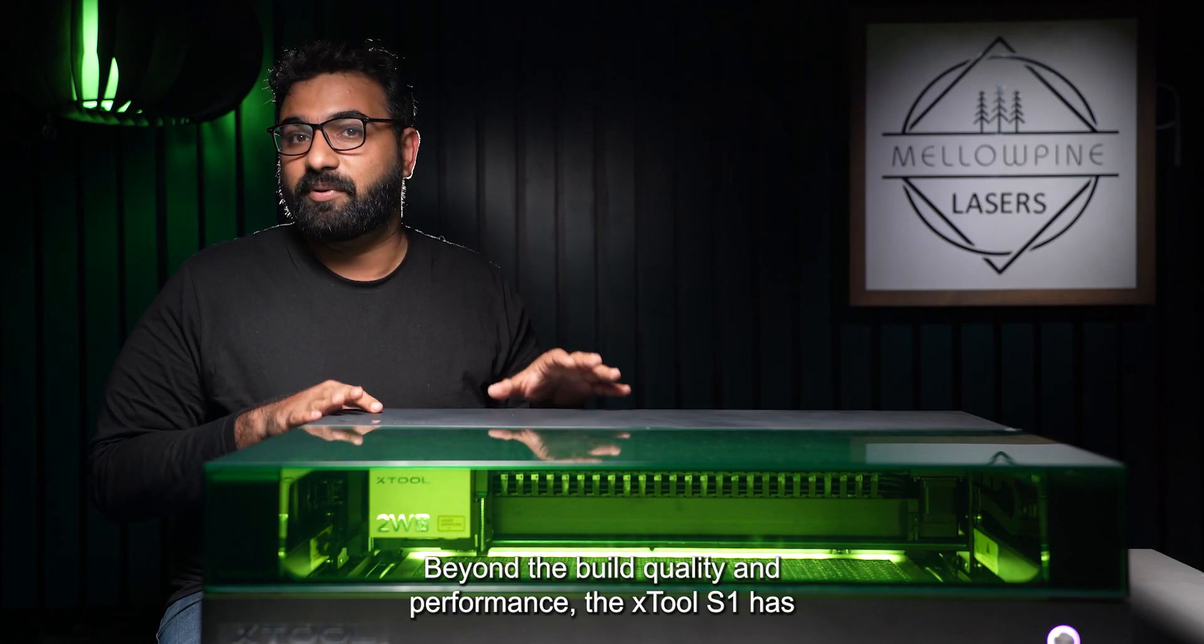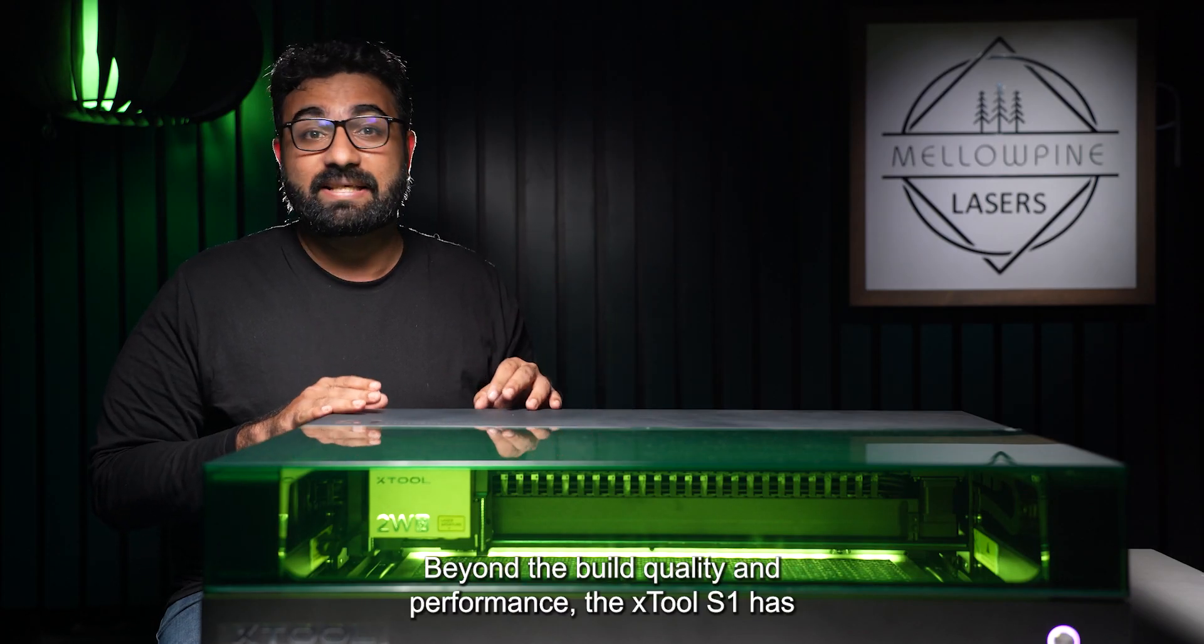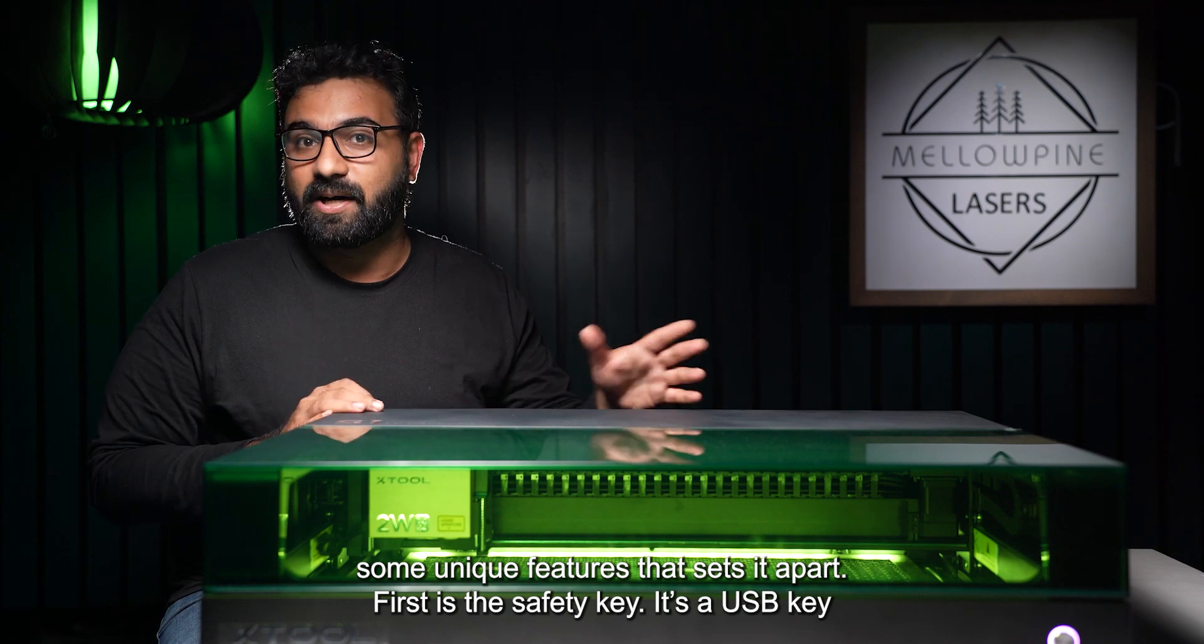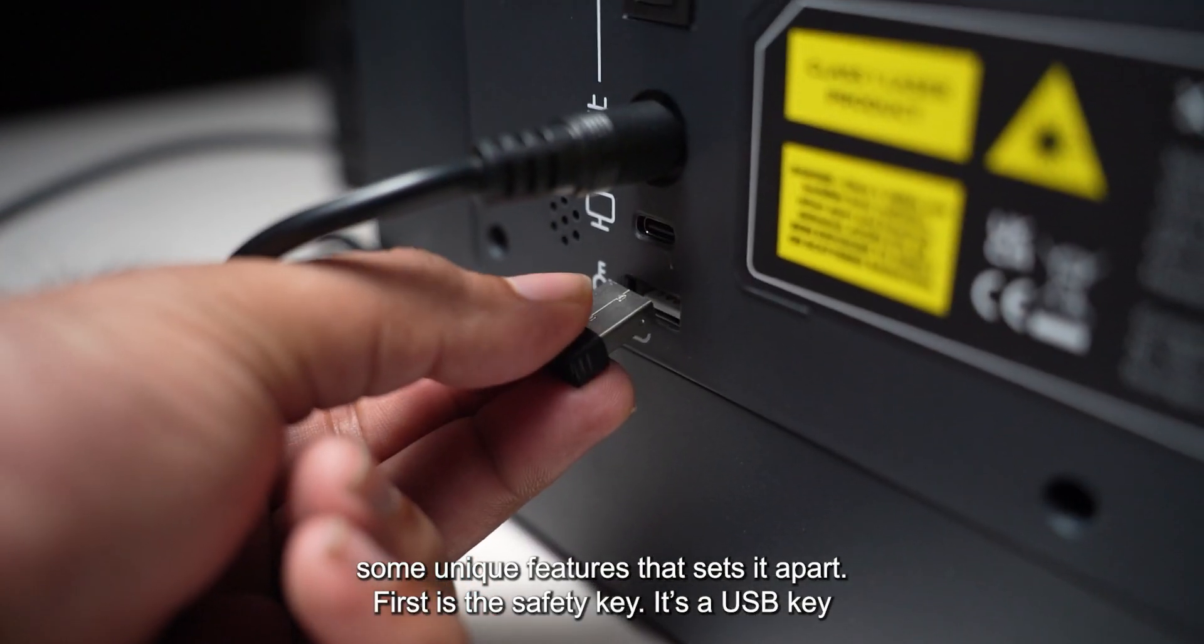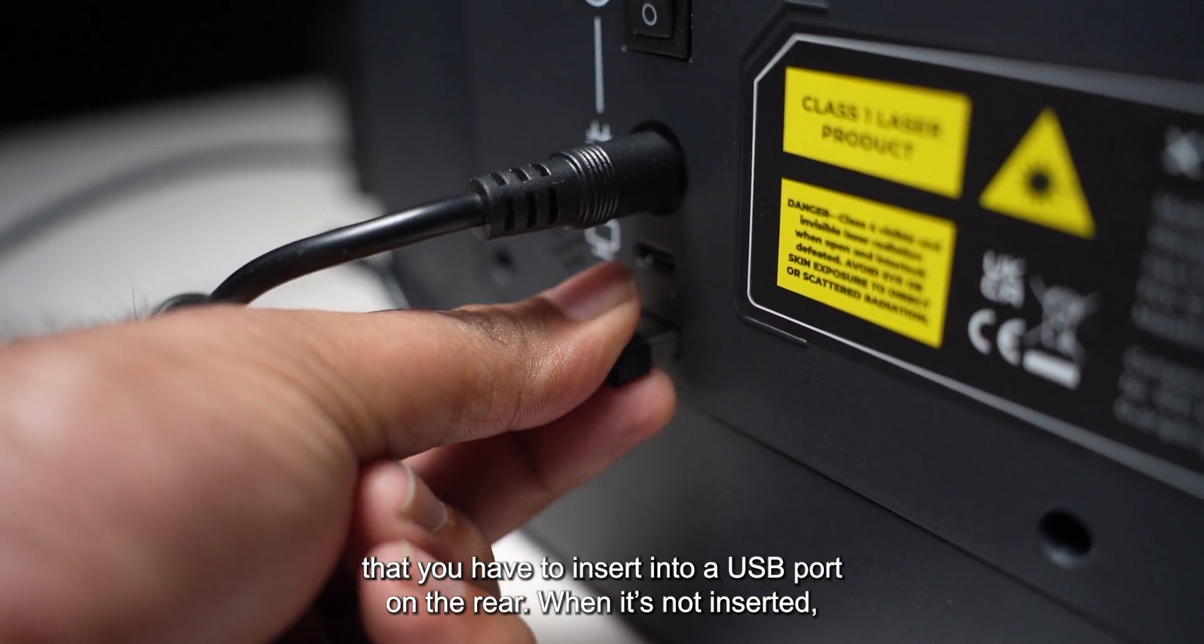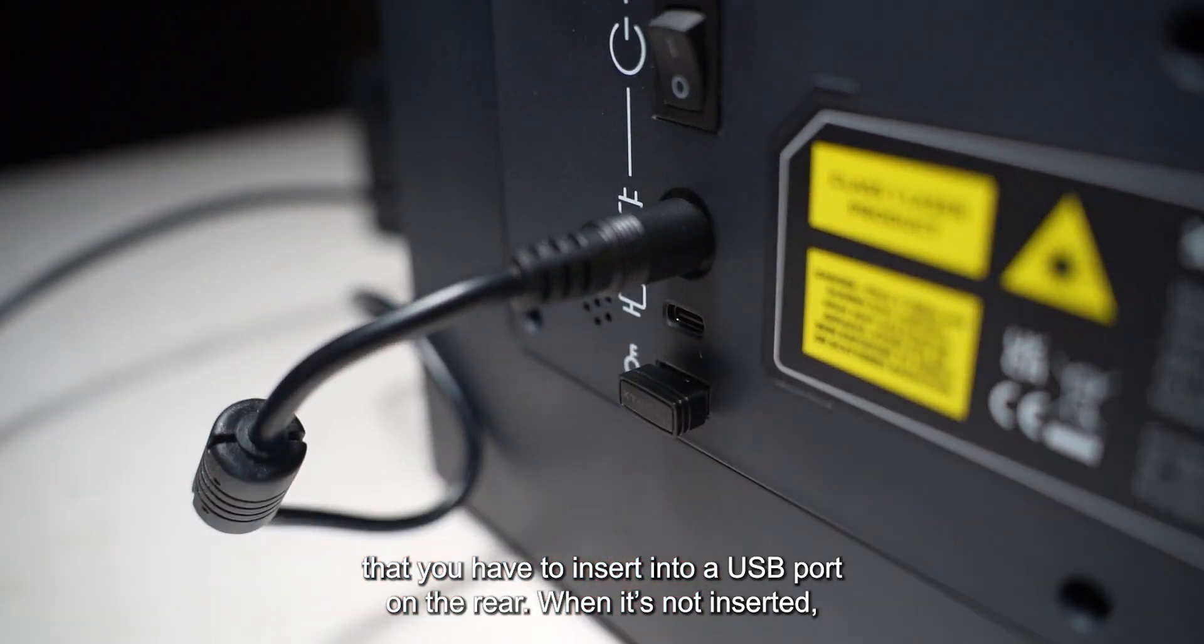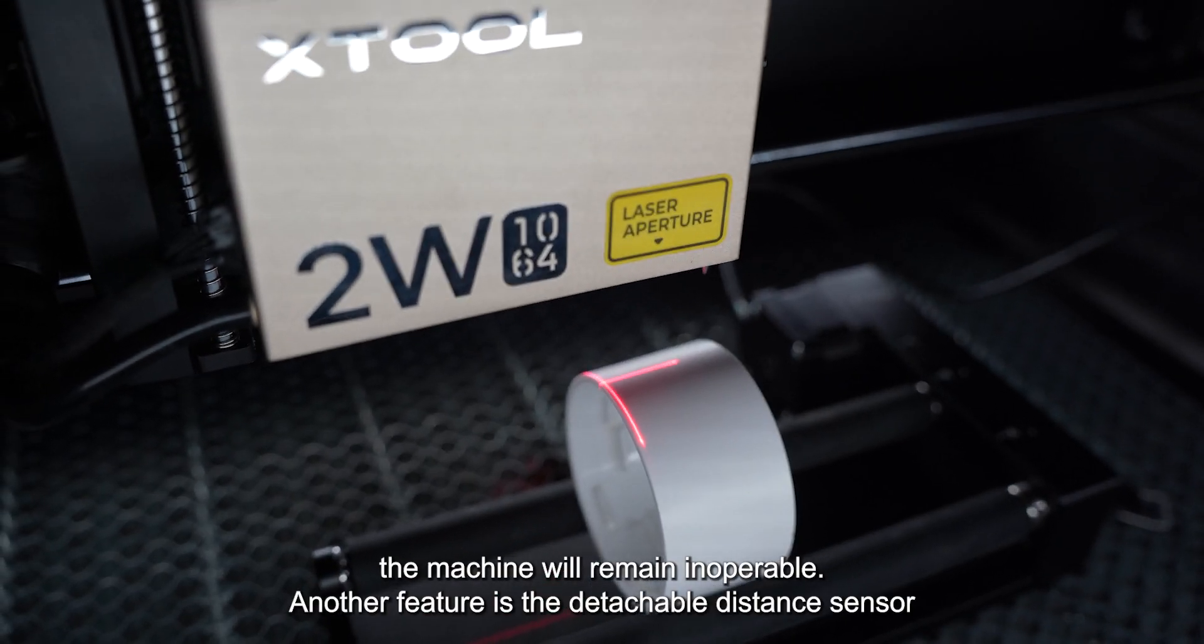Beyond the build quality and performance, the X2 S1 has some unique features that sets it apart. First is the safety key. It's a USB key that you have to insert into a USB port on the rear. When it's not inserted, the machine will remain inoperable.